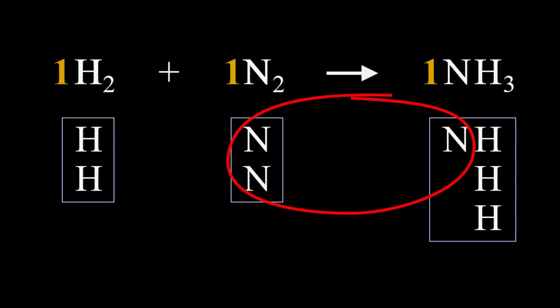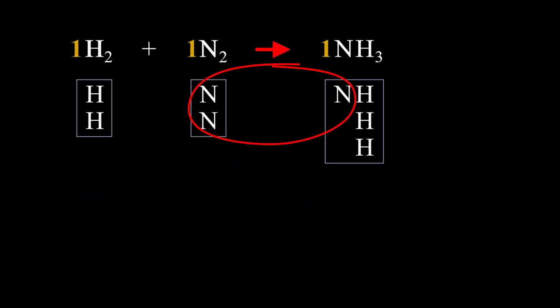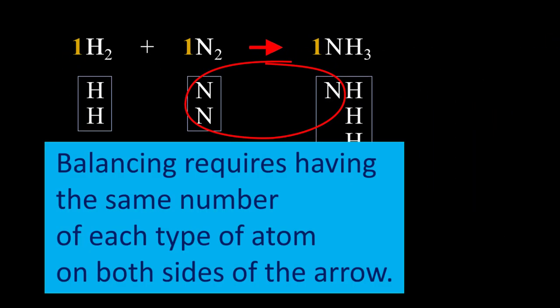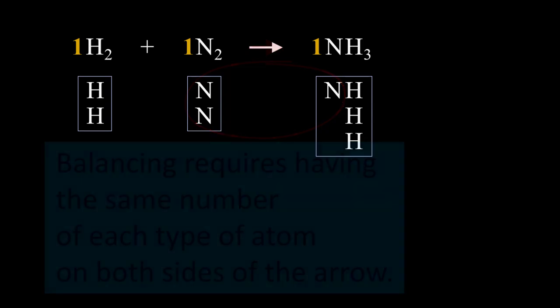We now can visually see what needs to be balanced. For example, there is 1 less nitrogen on the right of the arrow than on the left. And balancing requires having the same number of each type of atom on both sides of the arrow. So how do we balance?